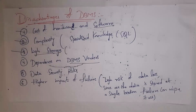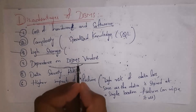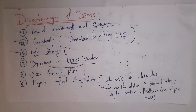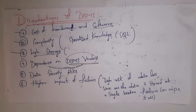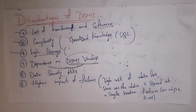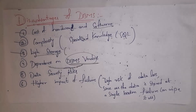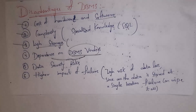The next disadvantage is dependency on DBMS vendors. DBMS vendors are people who provide DBMS software. For example, just as you cannot update a Samsung mobile yourself — only Samsung can provide updates — similarly, we cannot directly update DBMS software and completely depend on database vendors. Another disadvantage is data security risk: even with various security mechanisms, we cannot give 100% security because hackers keep implementing new techniques. The final disadvantage is high impact of failure — if data is stored in one location and failure occurs, the complete data may be lost.